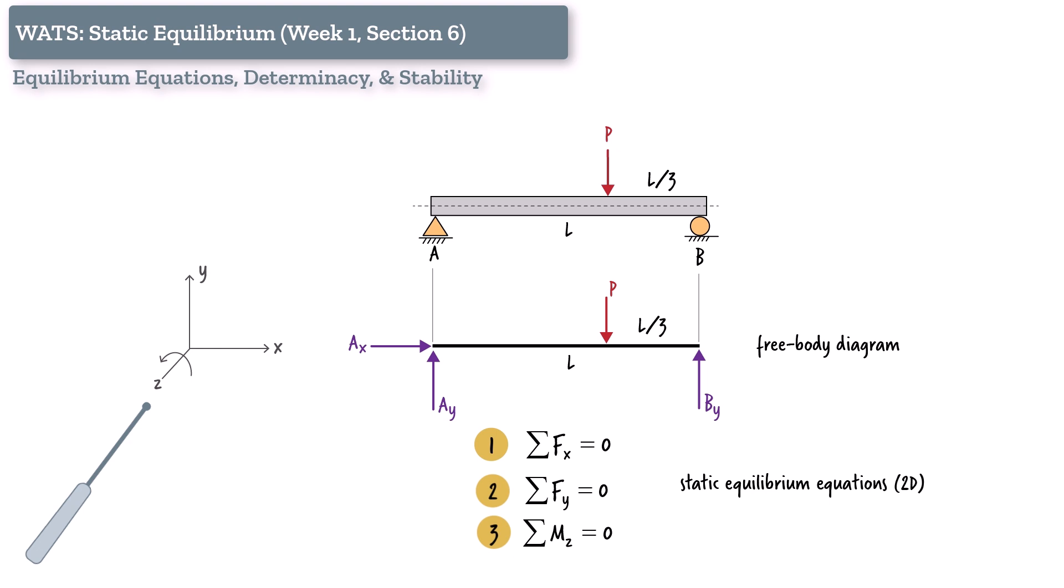Any force that tends to rotate the body within the xy-plane produces a moment about the z-axis. So when we write, the sum of the moments about the z-axis must be zero, we're saying the structure must not have any net tendency to rotate about the z-axis. In other words, we're making sure the system doesn't spin within its own plane. That's the rotational balance condition we enforce when analyzing two-dimensional structures.